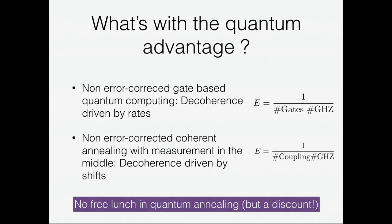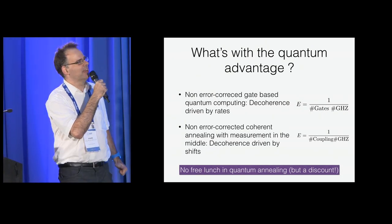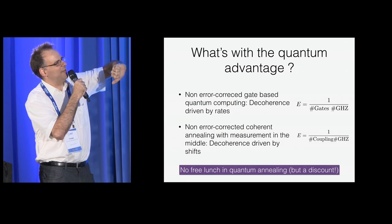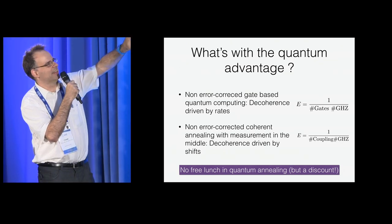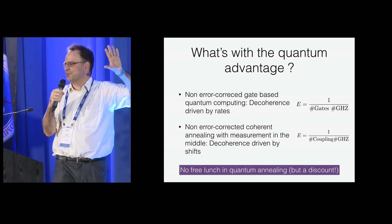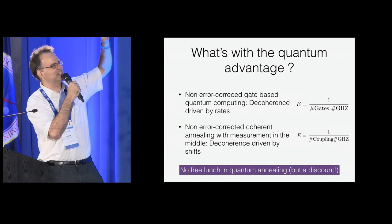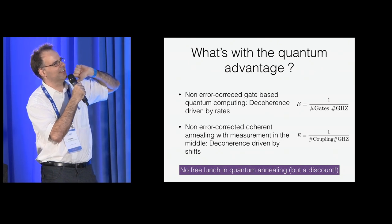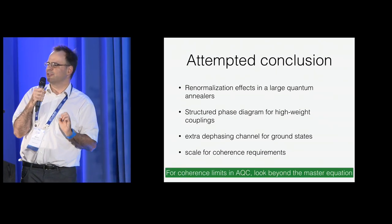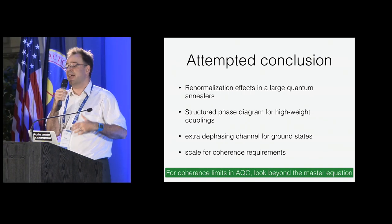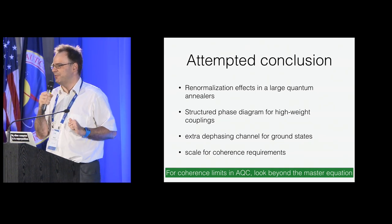What's the quantum advantage situation? In gate-based quantum computing, errors without error correction scale with the number of gates and with the size of entangled GHZ states created. In quantum annealing, instead of the number of gates, what matters is the weight of the coupling — a more benign scaling of environmental impact. There's no free lunch, but there is a discount. The attempted conclusion: if you visit Mario Schöndorf's poster tomorrow, you can see how the same randomization effect can help make more powerful measurements.